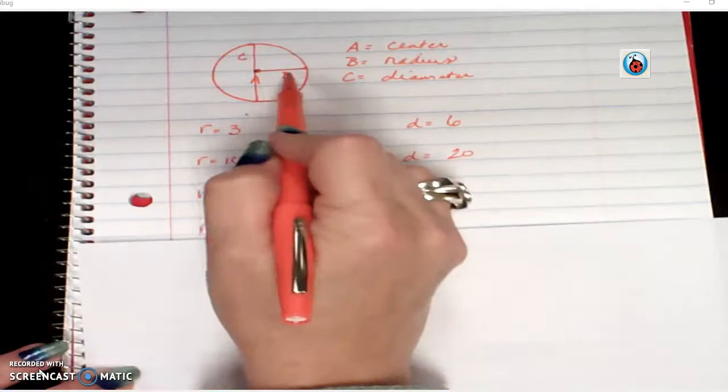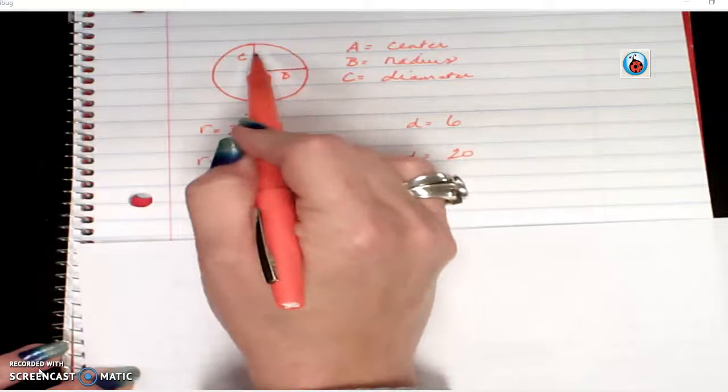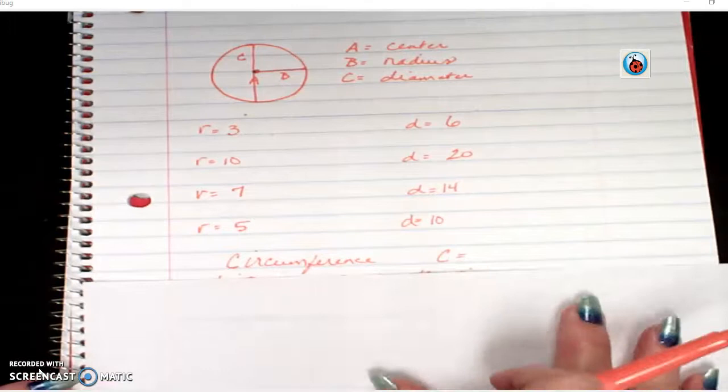So now we've talked about going across the center. What about if we went all the way around it? Well, if it was a sided figure, the distance around would be called the perimeter. Since it's a circular shape, the distance around it is called the circumference. The circumference is the distance around the circle.